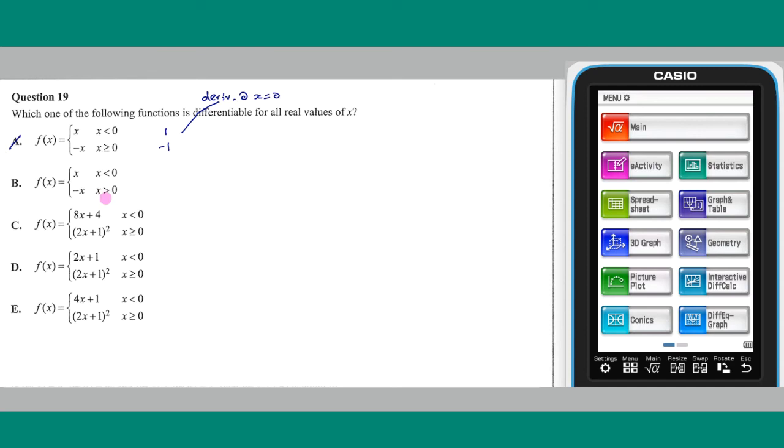Looking at option b, it is not defined for x equals 0, and so cannot be differentiable for all x. For option c, the derivative of its second piece at x equals 0 is 2 by 2 times 0 plus 1 times 2, which is equal to 4, and so c fails the smooth test as well. Option d has piece derivatives of 2 and 4, as found in part c, and so is not differentiable for all x.